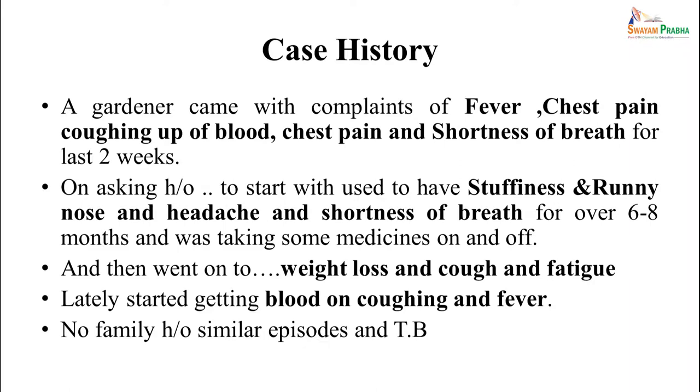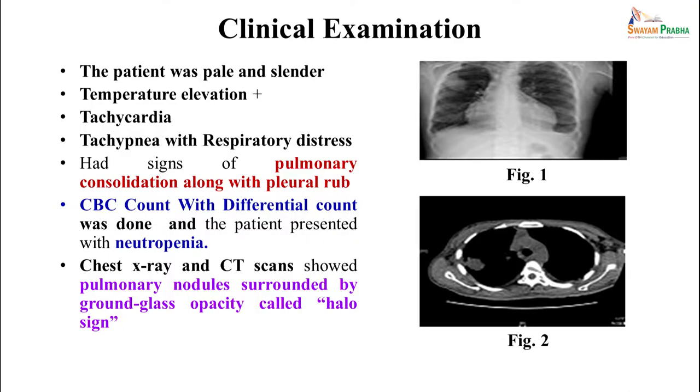Over the period of time the cough remained, he did not improve, there was weight loss, the patient felt fatigued on little tasks, and lately he started coughing blood in sputum and also started getting fever. On further history taking, we realized there was no family history of similar episodes or tuberculosis. On examination, the patient was pale and slender, had high fever, tachycardia, tachypnea with respiratory distress, signs of pulmonary consolidation along with pleural rub, and CBC showed neutropenia.